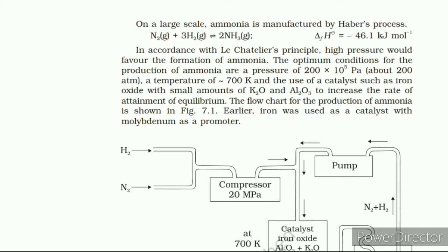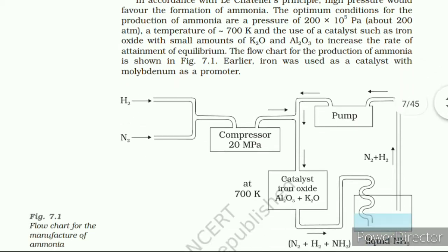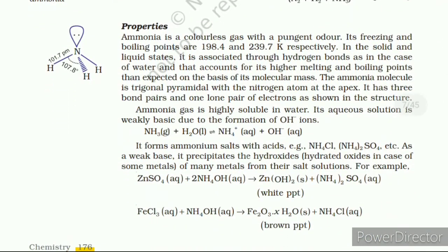7.4 Oxides of Nitrogen. Nitrogen forms a number of oxides in different oxidation states; the names, formulas, preparation, and physical appearance of these oxides are given in Table 7.3. Lewis dot, main resonance structures, and bond parameters of the oxides are given in Table 7.4. Why does NO₂ dimerize? NO₂ contains an odd number of valence electrons and behaves as a typical odd-electron molecule. On dimerization it is converted to stable N₂O₄ with an even number of electrons.